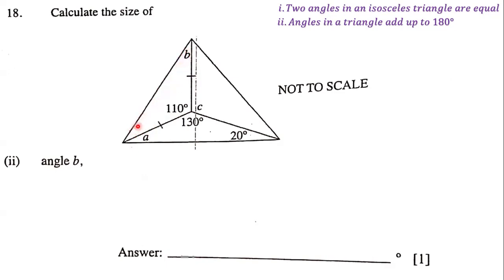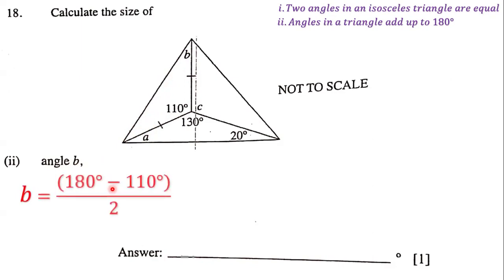So if this is B, the size of this angle is also B. Both base angles are B. In order to determine the size of angle B, we subtract 180 and 110. Once we subtract, we get 70 degrees. But that 70 degrees needs to be split into two because these two angles are equal. So 70 divided by two is 35. The size of angle B is 35 degrees.